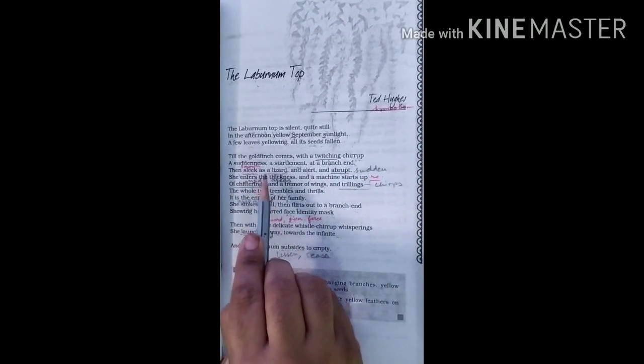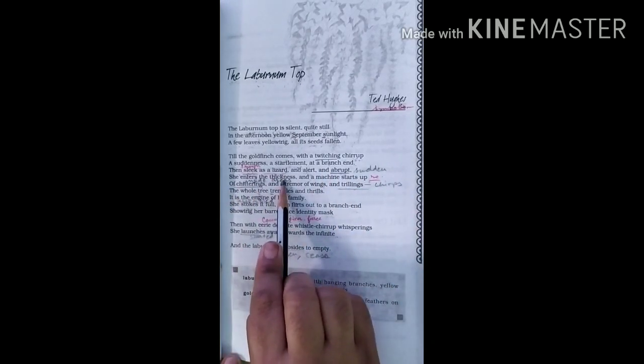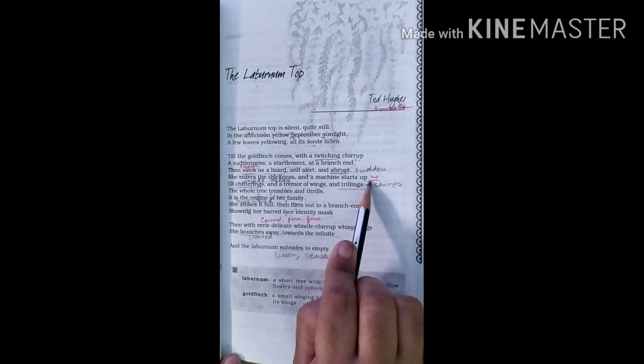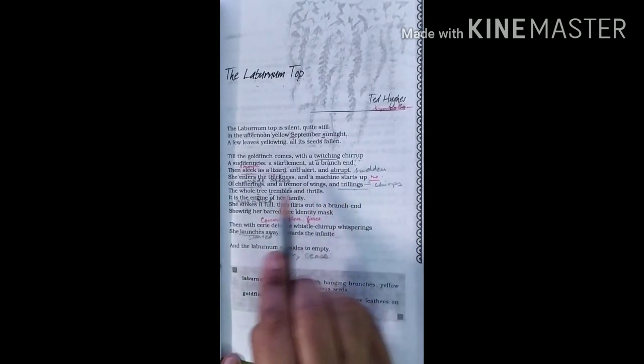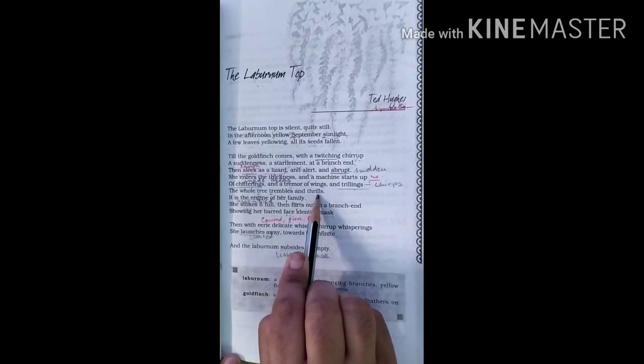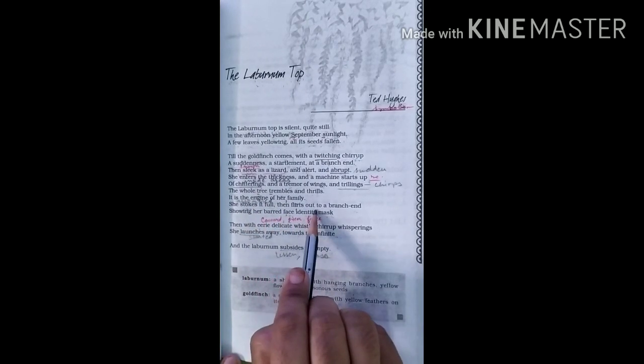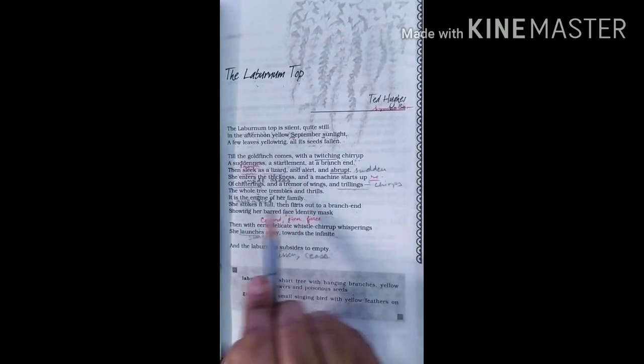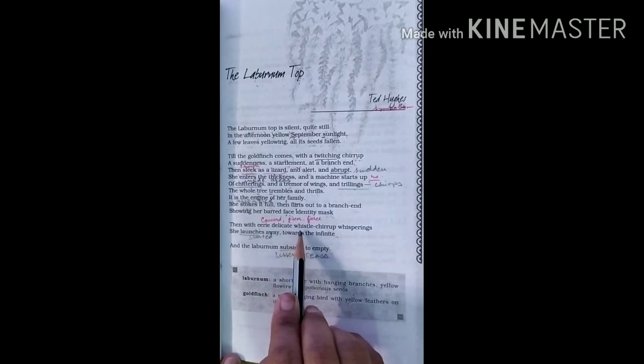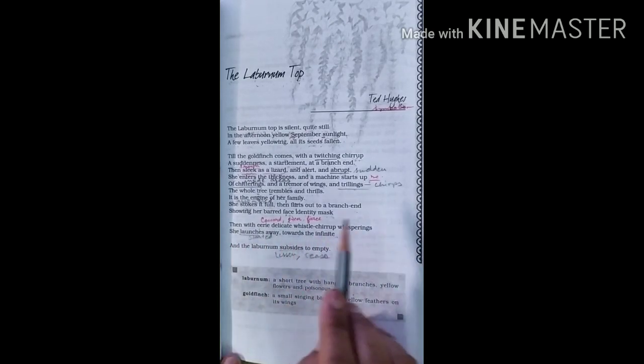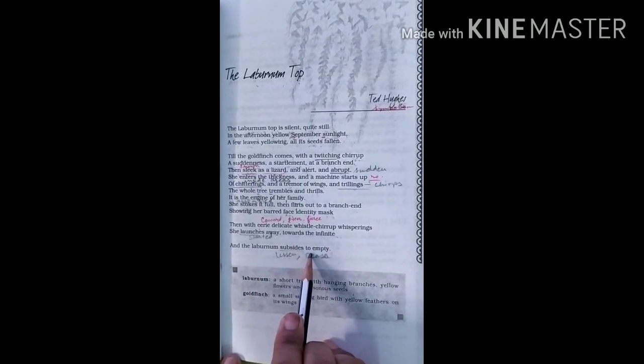Then sleek as a lizard and alert and abrupt, she enters the thickness and a machine starts up of chitterings and a tremor of wings and trillings. The whole tree trembles and thrills. It is the engine of her family. She stokes it full, then flirts out to a branch end showing her barred face identity mask. Then with eerie delicate whistle chirrup whisperings, she launches away towards the infinite and the Laburnum subsides to empty.